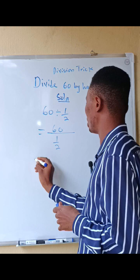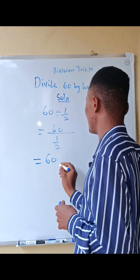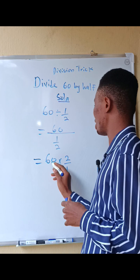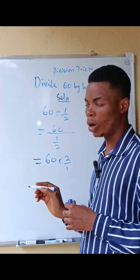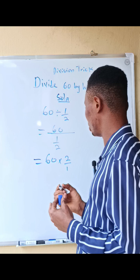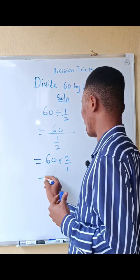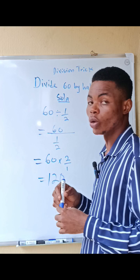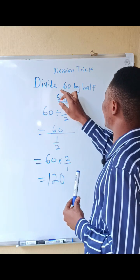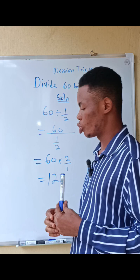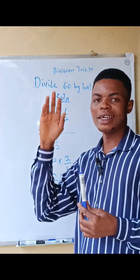You now have that this will become 60 multiplied by 2 divided by 1. So 60 multiplied by 2 is going to give you 120. 120 divided by 1 is 120. So the answer is 120. 60 divided by half is 120. That is the answer. Bye bye.